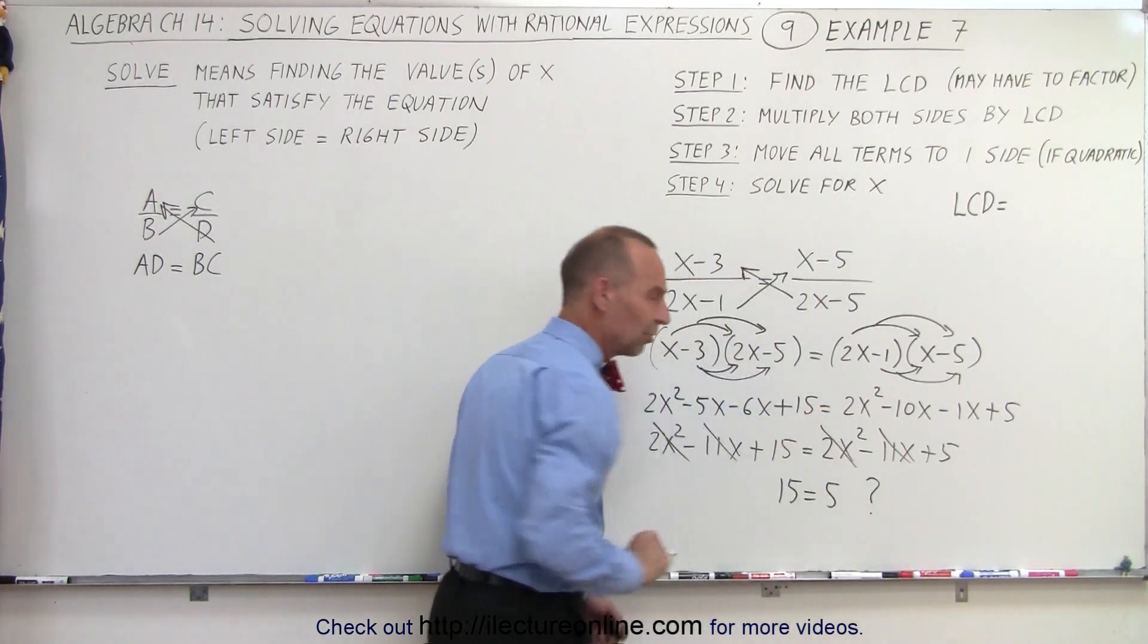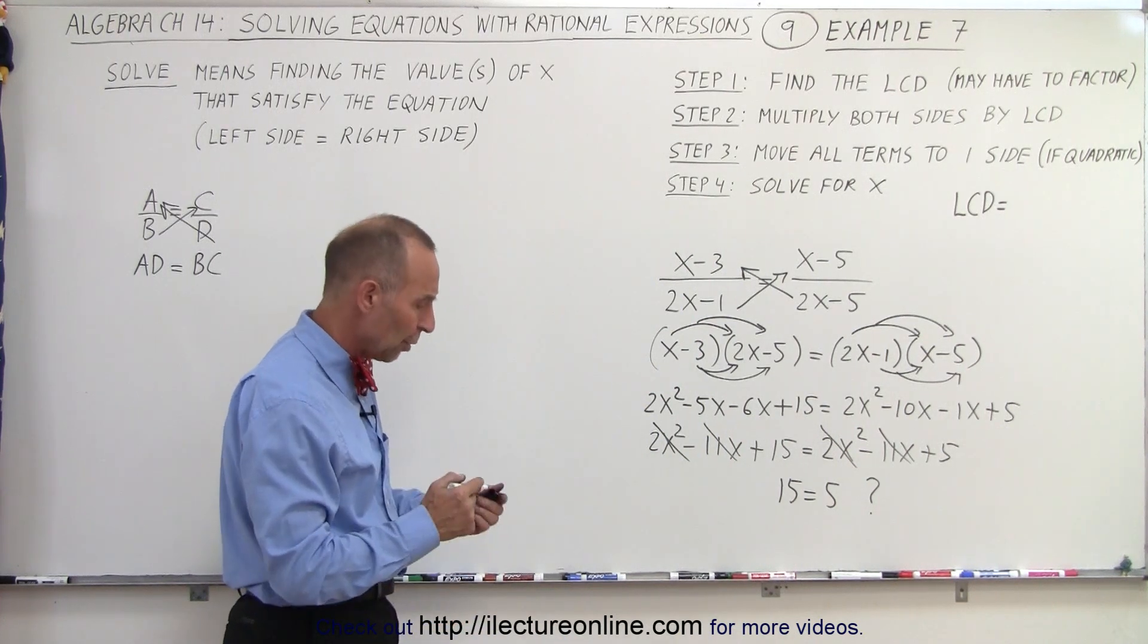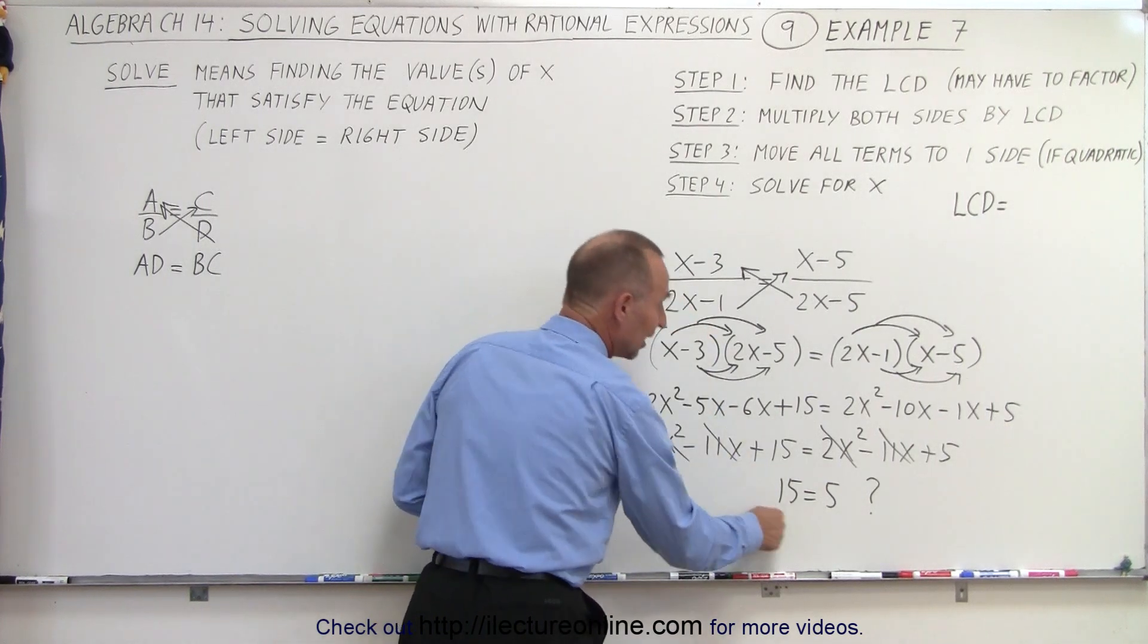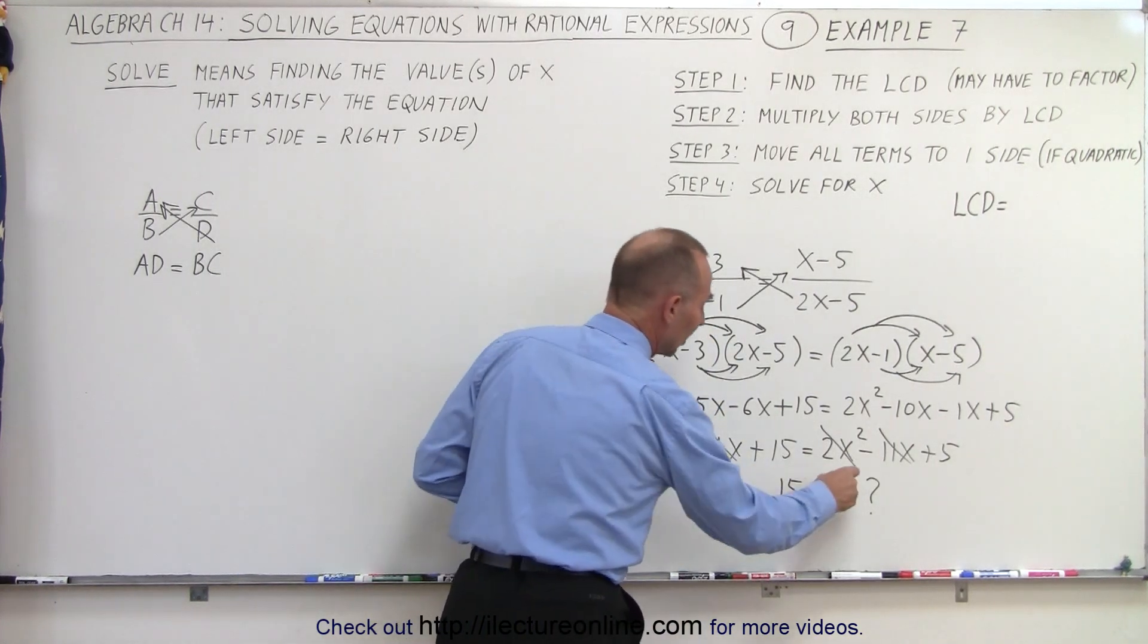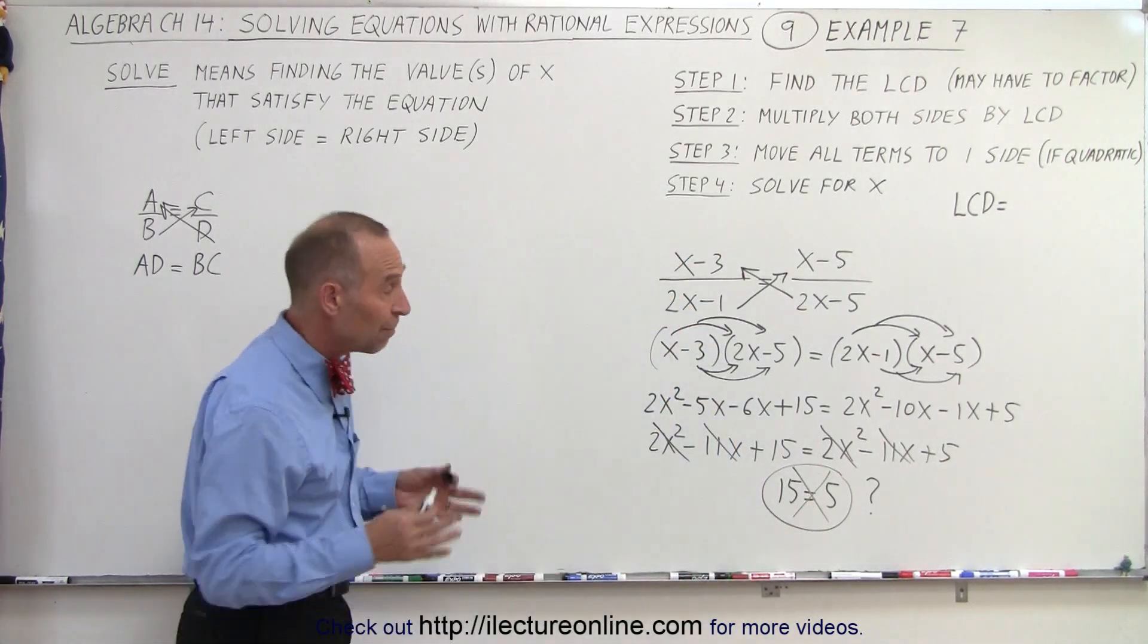But hey, that's kind of strange, because we know that's not the case. 15 can never equal 5. In other words, no matter what value we plug in for x, this can never be true. And since this can never be true, we have no possible value for x to make that true.